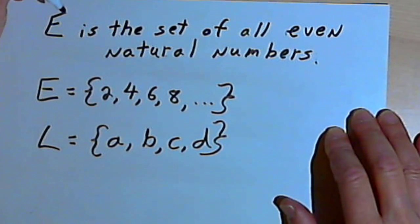So sets are usually defined as collections of objects. Those objects could be letters, numbers, colors, baseball teams, more or less anything you want, students in a class. And sets are usually designated with capital letters.